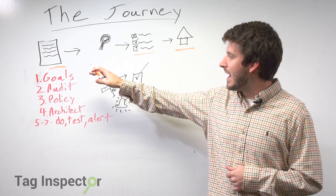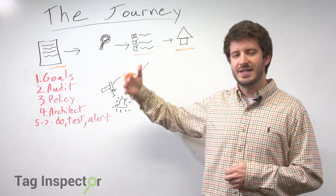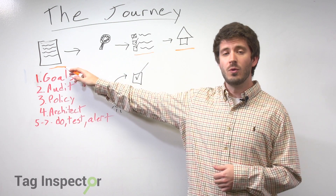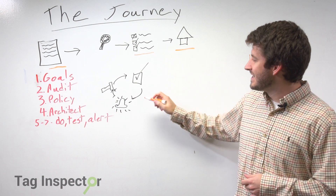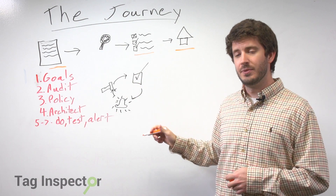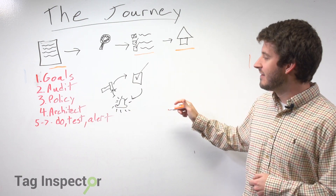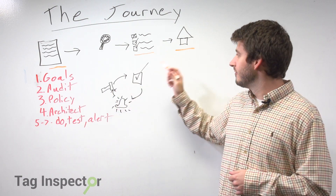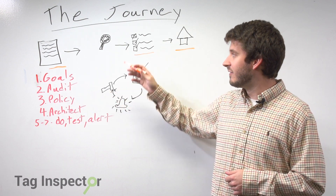Now we know exactly what we're doing and what steps we need to take in order to accomplish the goal we defined back in step one. This gets us into what we call our action loop. Steps five, six, and seven are the actual implementation of the architecture and everything that we've defined.